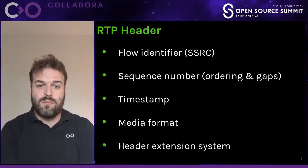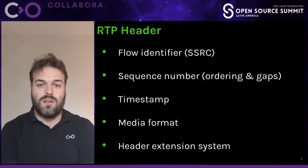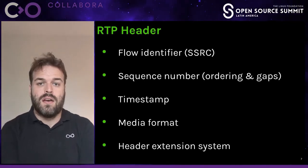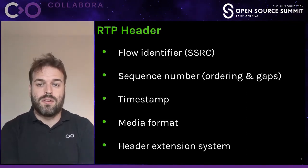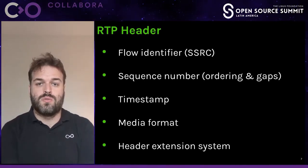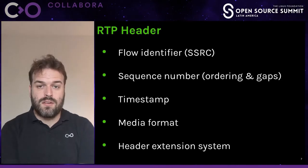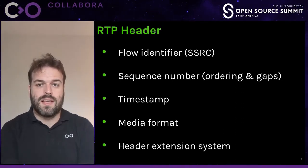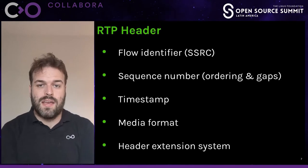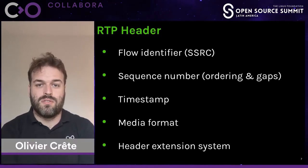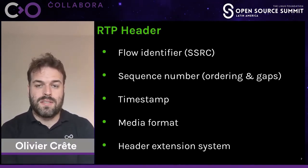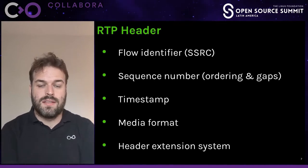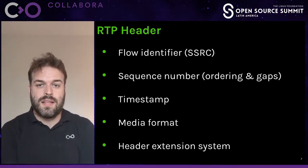It has an inline media format identifier so that the receiver can know what kind of media it's receiving. This is particularly useful so that you can switch the type of media or codec at runtime. And then it has a system to extend the header — so if this 12-byte header doesn't have all the information you need, you can add extensions. This is one of the things that the WebRTC system does; it uses a couple of RTP header extensions.